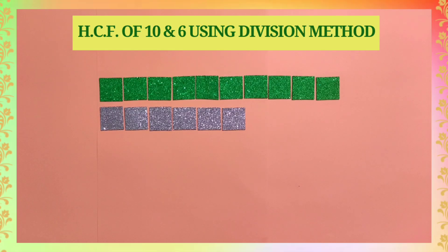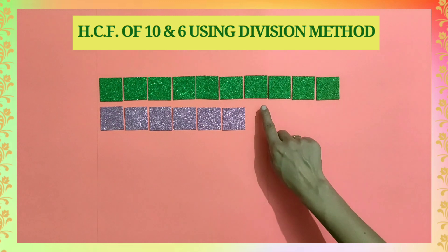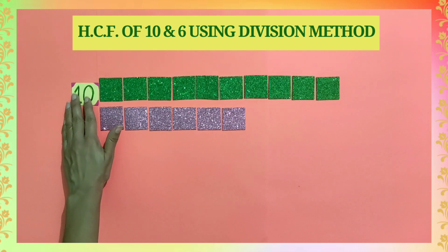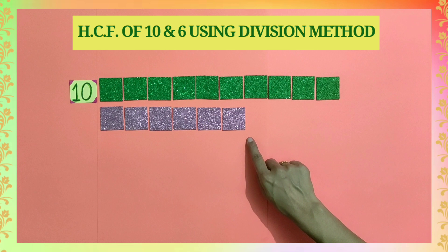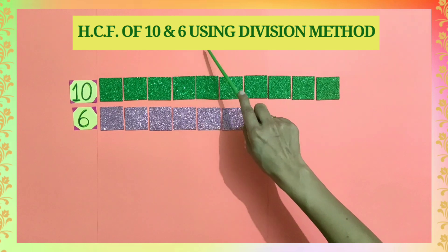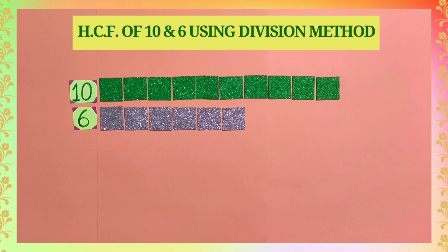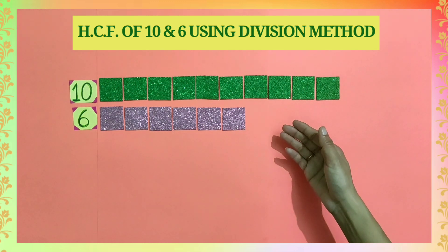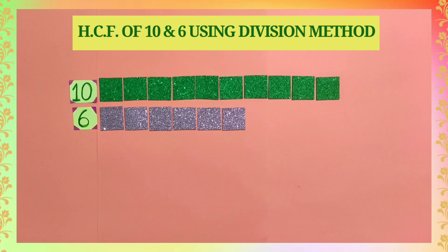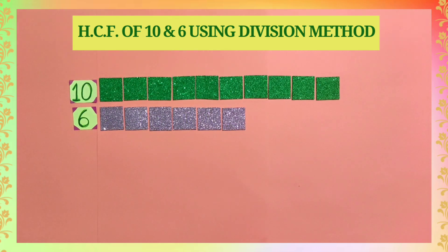Dear students, we will understand division method with the help of an easy and interesting activity. We have taken green tiles 10 in number and pink tiles 6 in number. And we want to find the HCF of 10 and 6 using division method. For this, we will keep dividing green and pink tiles till we can form groups of 10 and 6 having equal number of tiles so that no tile is left.